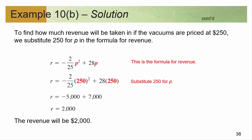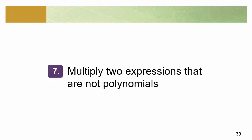Then if we want to figure out how much revenue we'll make at a price of $250, all we do is substitute 250 in for p. Remember order of operations — first you square it, then multiply by −(2/25), and that's where you get −5,000. Here it's just a simple multiplication. Put those two things together and your revenue is going to be $2,000 if you price it at $250.